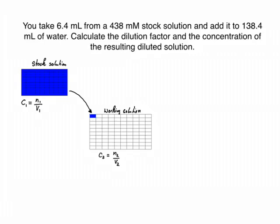In this example we are required to make a working solution or a diluted solution. To that aim, we take 6.4 milliliters of our stock solution, and we have a known concentration of this stock solution. So our concentration of the stock would be 438 millimolar.